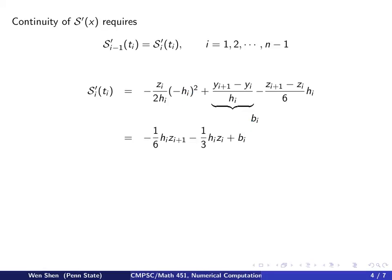Okay, so after some simplification, getting rid of one of the hi's, this simply takes this form for s prime i at ti.